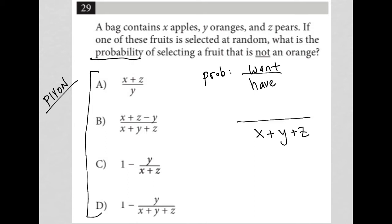Now, what do I want? I want something that is not an orange. Oranges are Y, which means I want either an apple or I want a pear. So these are the things that I could choose from that would not be oranges, and therefore that must be what our answer is.